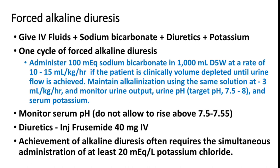Achieving alkaline diuresis often requires simultaneous administration of at least 20 milliequivalents per litre of potassium chloride. Whenever treating the patient with fluids and bicarbonate, there is a high chance of hypokalemia. Potassium should be given depending on levels, targeting at least 20 milliequivalents per litre of potassium chloride, and corrected accordingly.